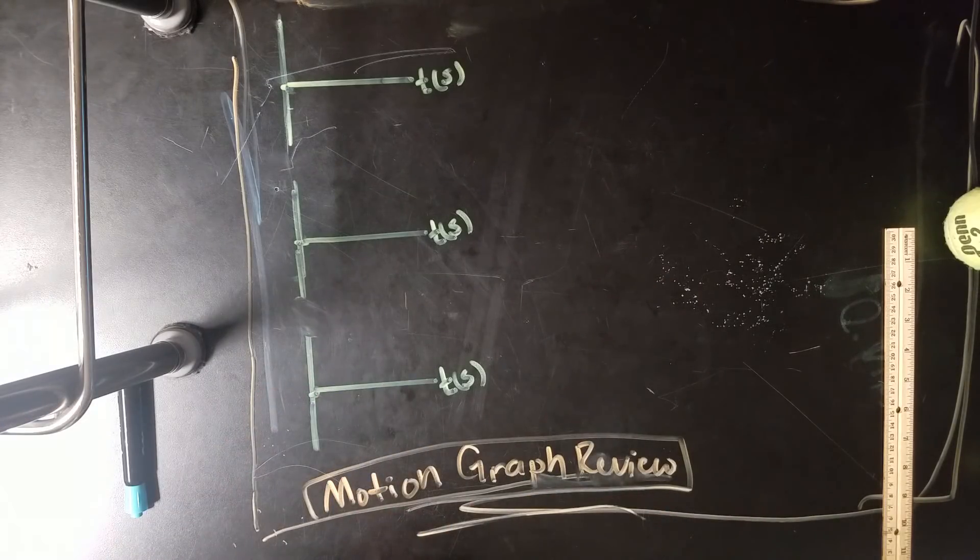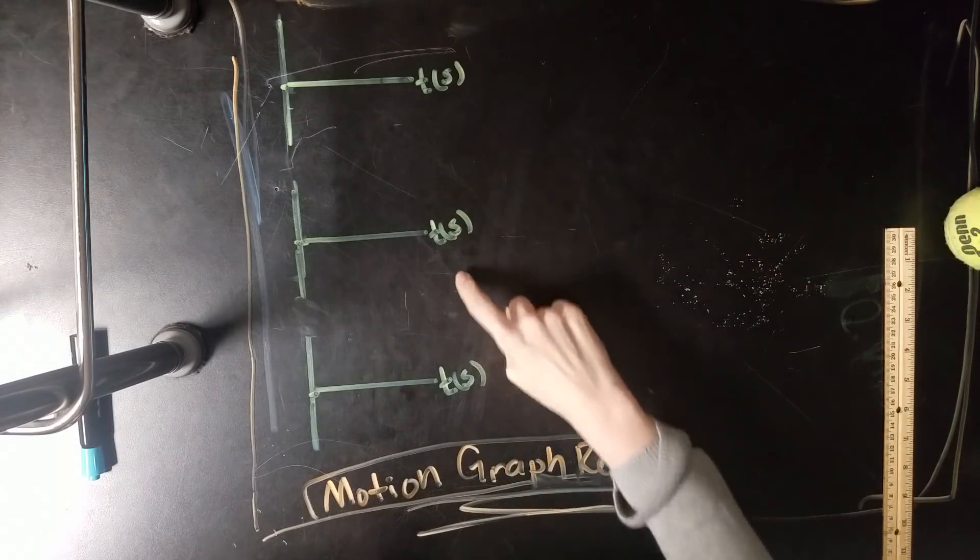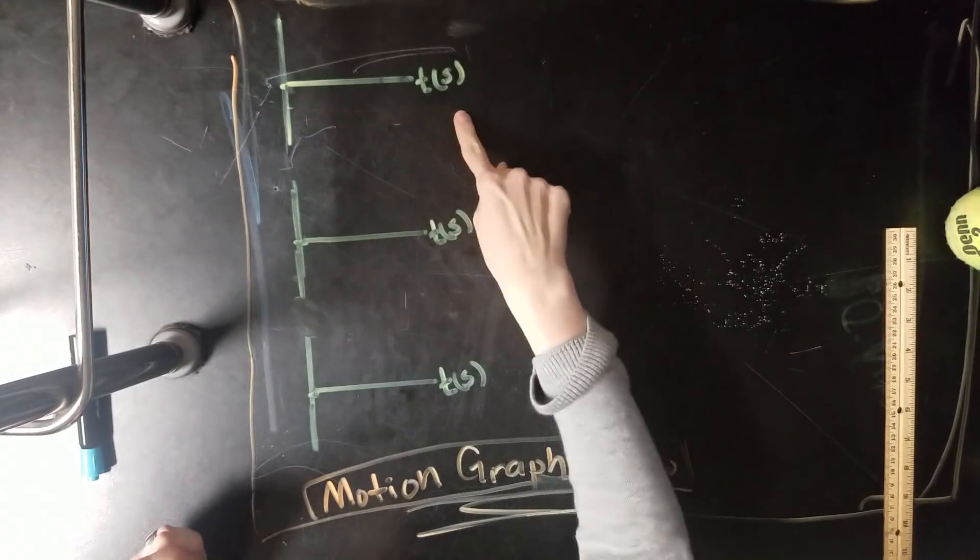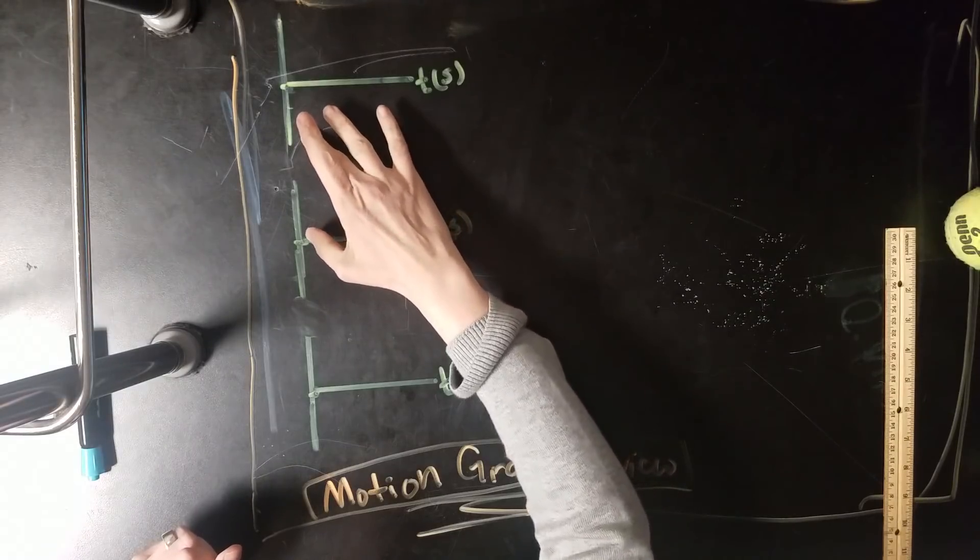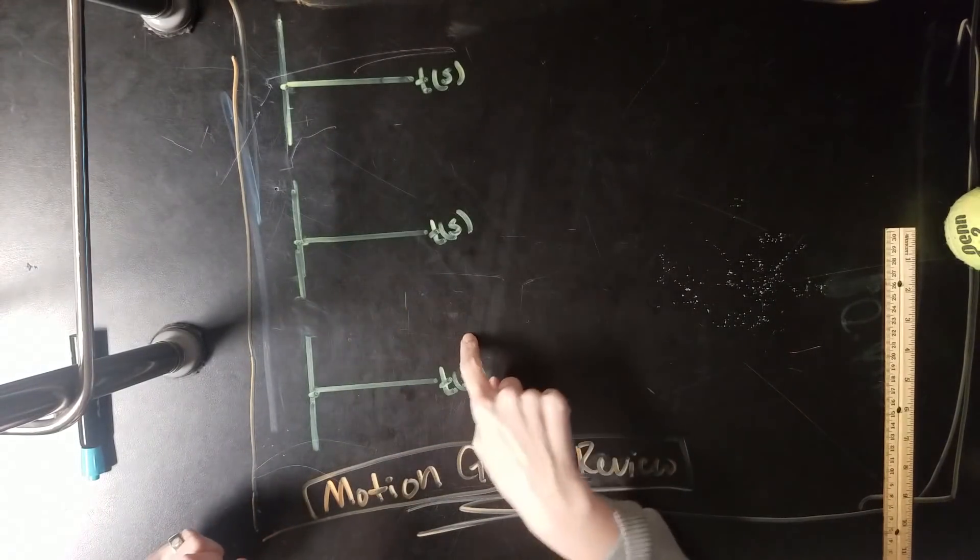So anyway, the important thing to know is there are three of them, and they all are with respect to time. That means that time is your input, it's the thing you're looking at, and then you're going to get an output based on that. So it's kind of like a function, so your horizontal in all of these is time.